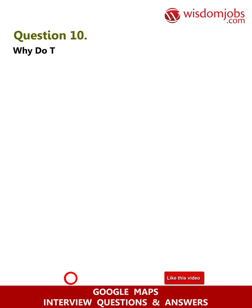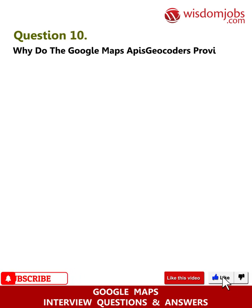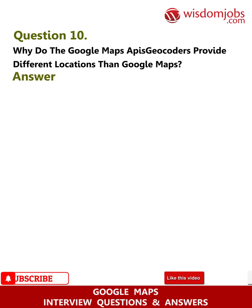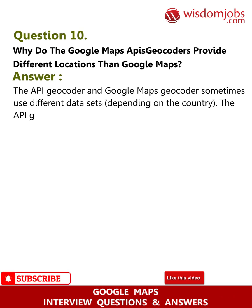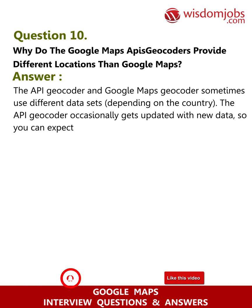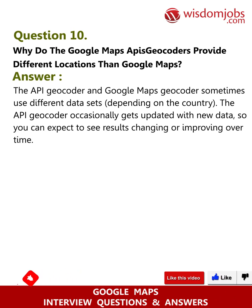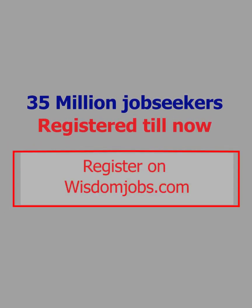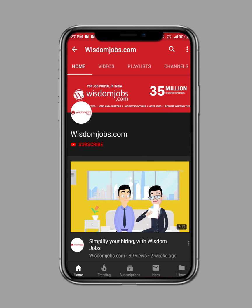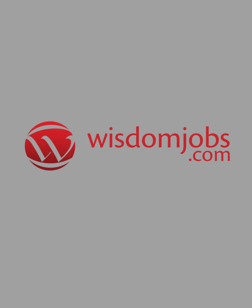Question 10: Why do the Google Maps API geocoders provide different locations than Google Maps? Answer: The API geocoder and Google Maps geocoders sometimes use different datasets. Depending on the country, the API geocoder occasionally gets updated with new data, so you can expect to see results changing or improving over time.